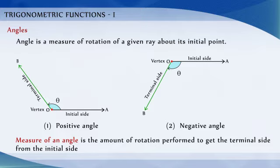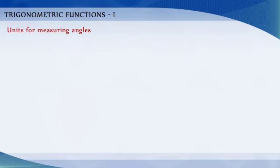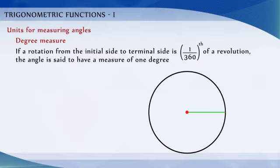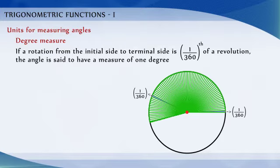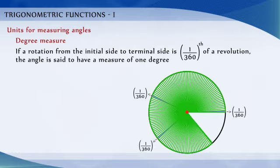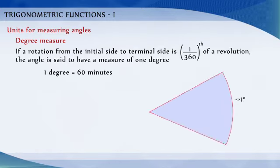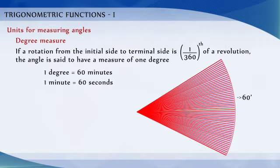There are several units for measuring angles. Degree measure: if a rotation from the initial side to terminal side is 1/360th of a revolution, the angle is said to have a measure of 1 degree. A degree is divided into 60 minutes and a minute is divided into 60 seconds.